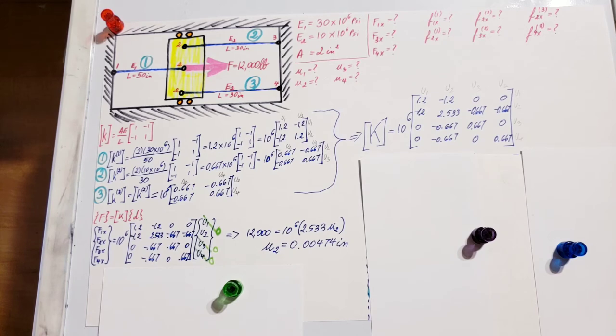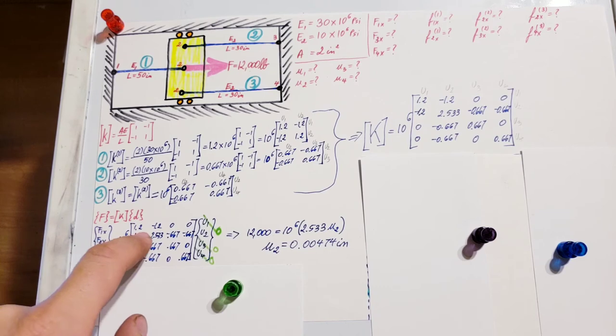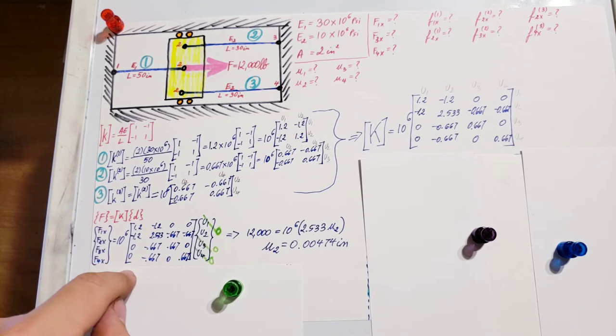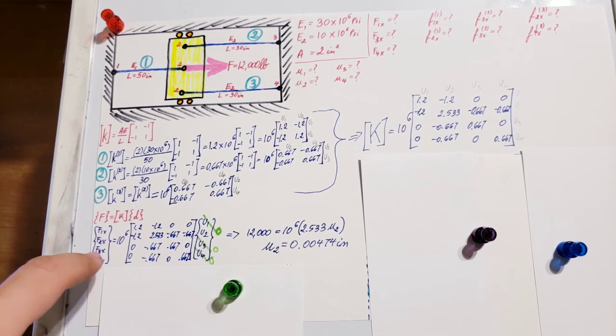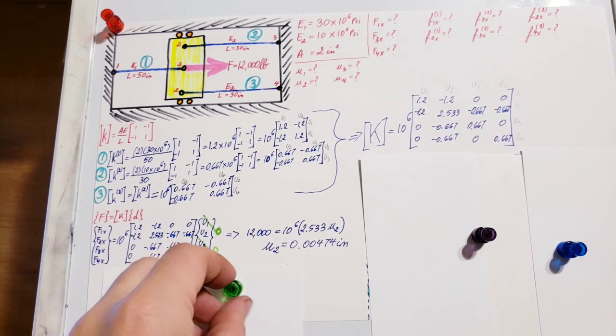Now that we've found displacement at u2, we have everything we need to find our global forces. We can go back and use just this equation or this equation—every single time, the only unknown will be our force that we need to find, since u2 we found.